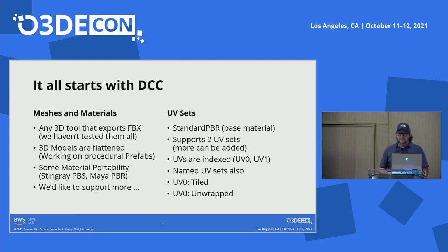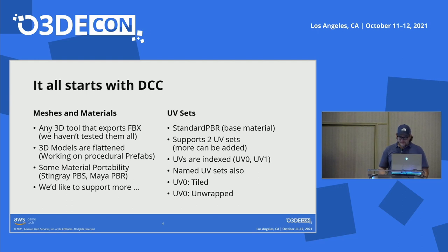Some materials from DCC tools are portable, meaning they can be converted to Atom materials automatically. An example is Stingray PBS inside of Maya, and we'd like to support more of those in the future. For 3D models, we have a material called Standard PBR — Physically Based Rendering — which has its roots in work from Disney presented in 2012. Our models support two UV sets, which can be indexed or namespaced.